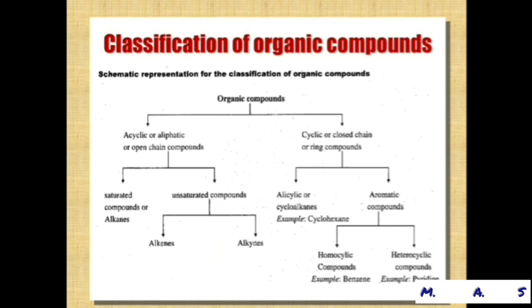Next, we will study about the classification of organic compounds. The organic compounds are classified into two classes: first, acyclic or aliphatic or open chain compounds; and second, cyclic or closed chain or ring compounds. Acyclic compounds are further classified into saturated compounds or alkanes, and unsaturated compounds which are further divided into alkenes and alkynes. The cyclic or closed chain compounds are further divided into alicyclic or cycloalkanes — for example, cyclohexane.